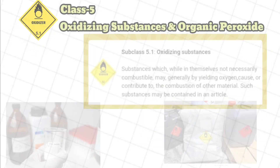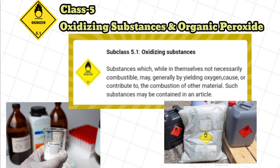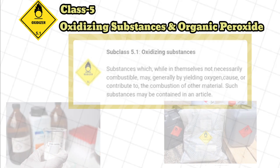Class 5: Oxidizing substances and organic peroxides. Subclass 5.1, Oxidizing substances: substances which, while in themselves not necessarily combustible, may, generally by yielding oxygen, cause or contribute to the combustion of other material. Such substances may be contained in an article.